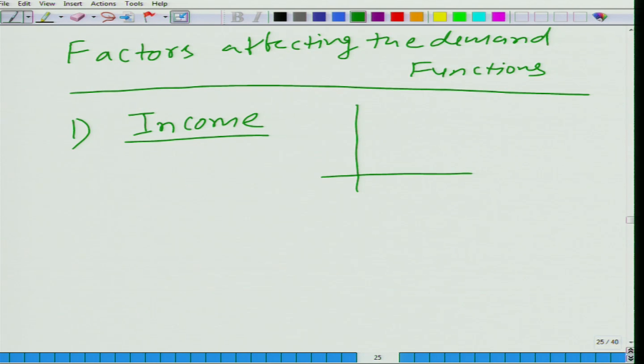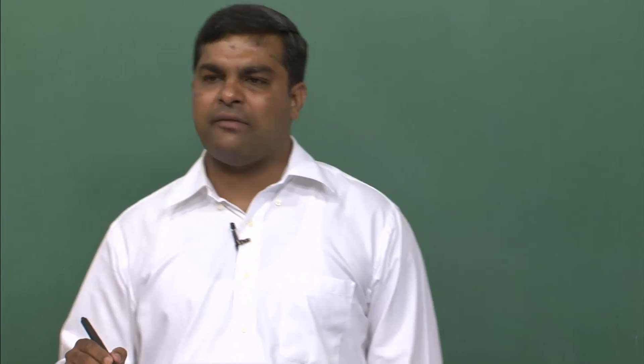So what you are saying is that we have here price on y-axis and q on x-axis, and let's say this is the demand curve, a downward sloping function. And then if income goes up, this is what we get. Is it true? It is true in most of the cases but not always.